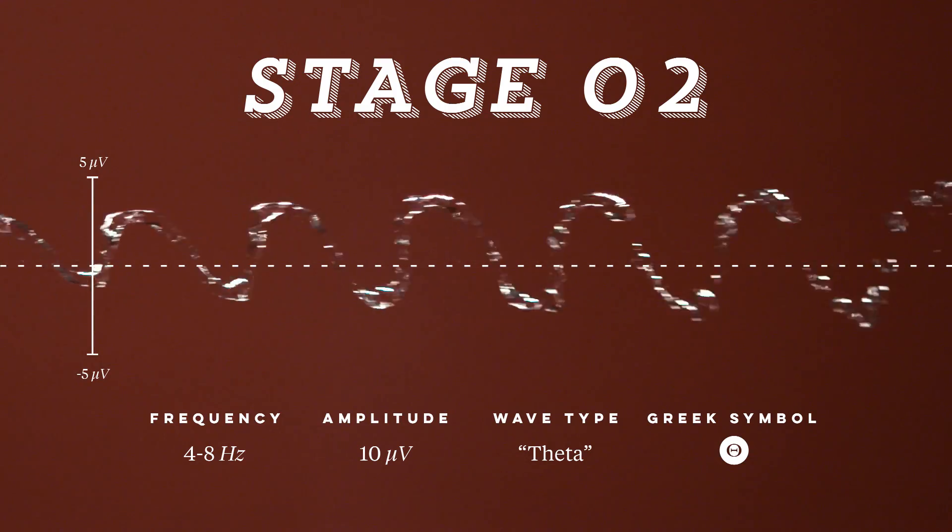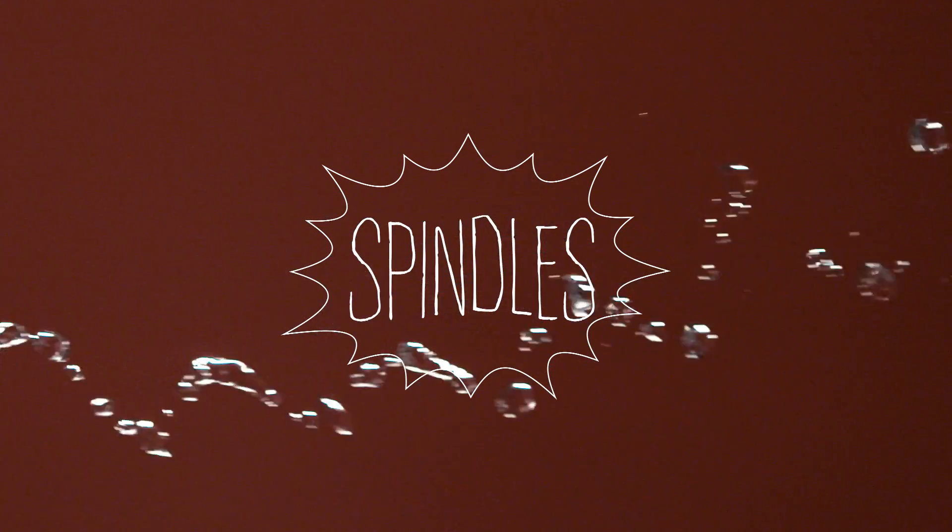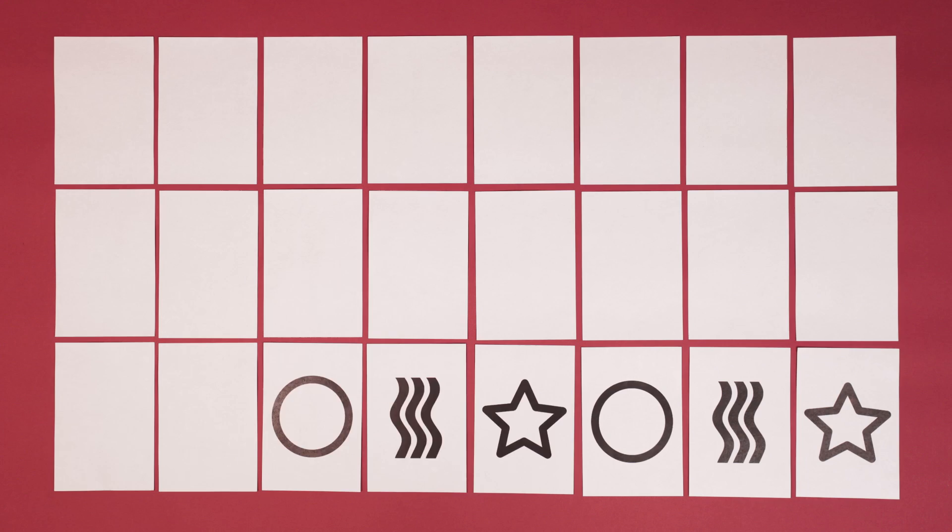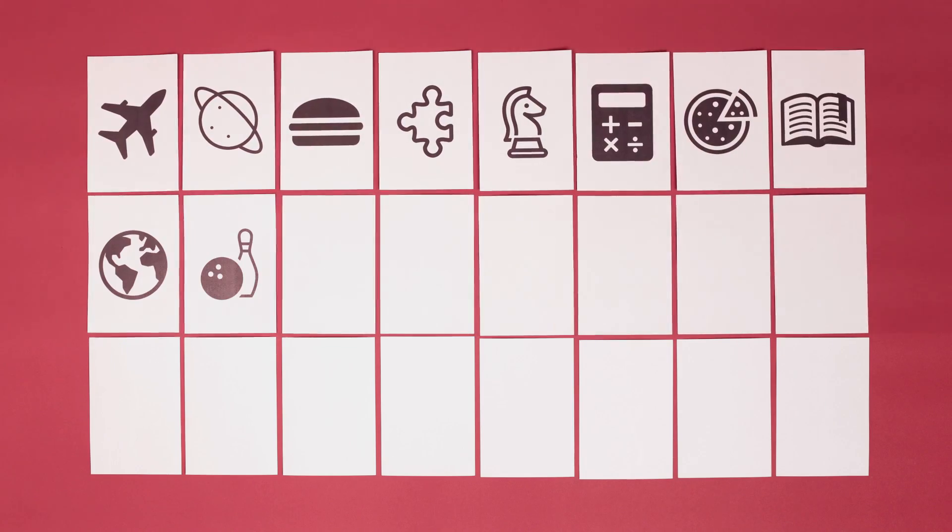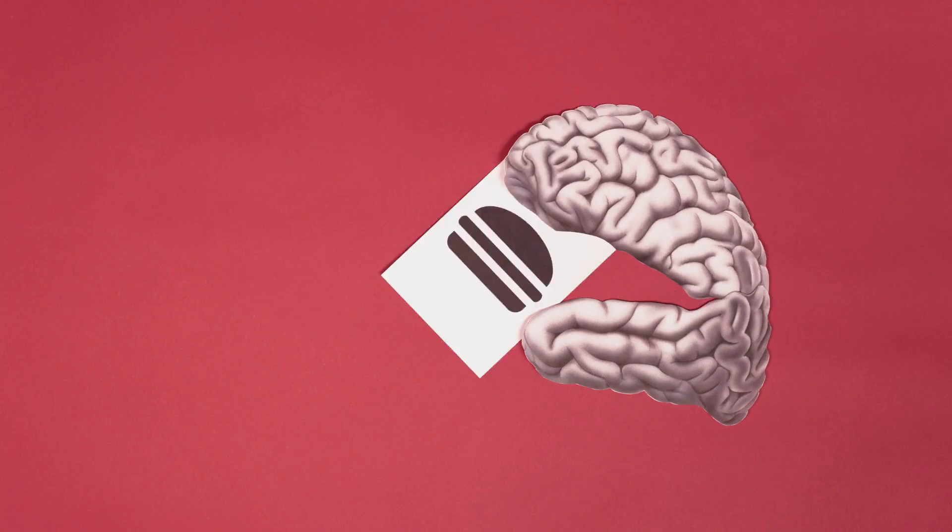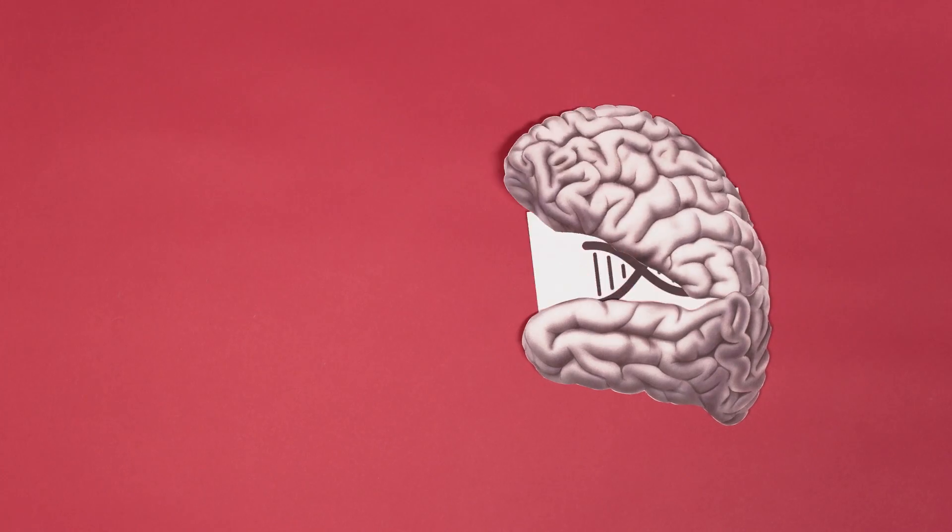During stage two, sudden bursts of brain activity called spindles start spiking into the theta waves. So, what does a spindle do? We don't know exactly, but it plays some role in memory consolidation. People who have learned a task show more sleep spindles than people who haven't learned. The best guess so far is that sleep spindles are a sign that your brain is downloading the new information it's taken in that day.